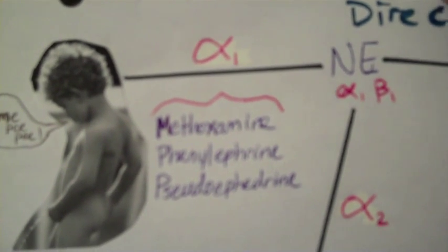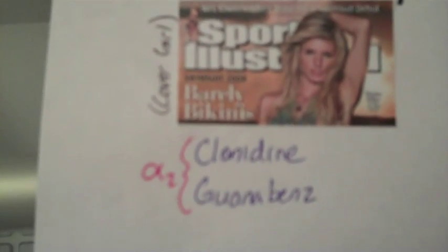The picture I have for beta-2 agonists is a girl pointing at her double Ds — representing ipratropium, albuterol, metaproterenol, and the double Ds for dopamine and dobutamine. Terbutaline was added after the graphic was done. Going back to norepinephrine for the alpha-1s, there's a little kid taking a pee saying 'me pee pee' — the drugs are methoxamine, phenylephrine, and pseudoephedrine. Down to alpha-2s, there's a picture of Marissa Miller, the Sports Illustrated cover girl — CG stands for clonidine and guanabenz.